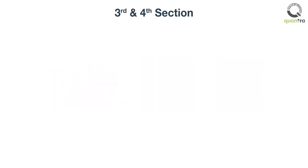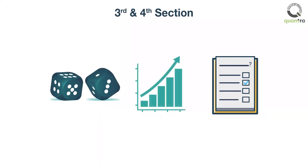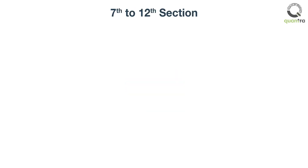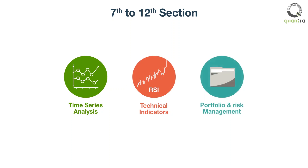In the third and fourth sections, we look at questions related to probability and statistics. In the fifth and sixth sections, we practice concepts on Python through MCQs and interactive coding exercises. From the seventh to twelfth sections, we revise concepts of finance such as time series analysis, technical indicators, options, portfolio, and risk management.